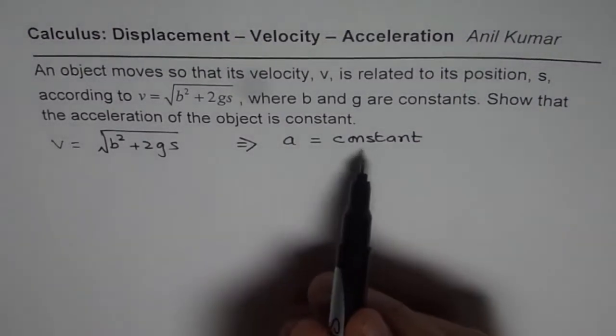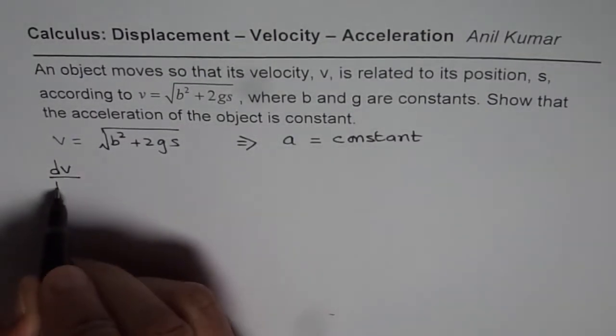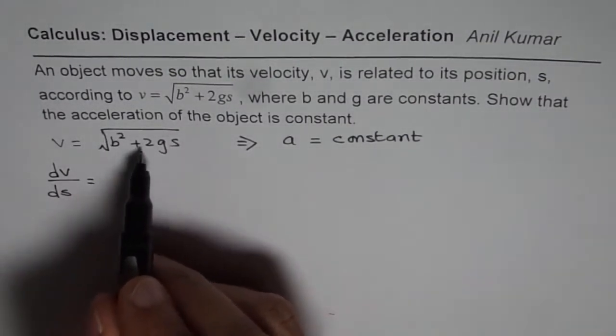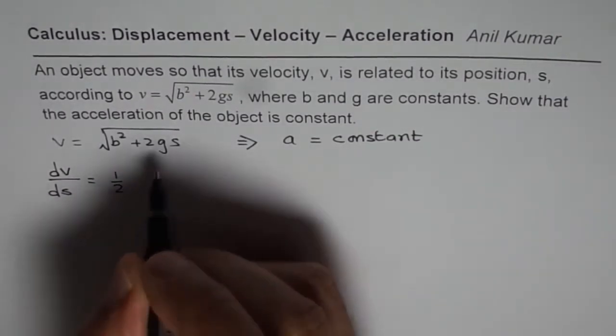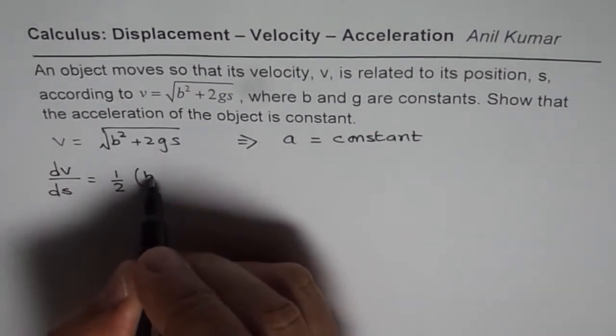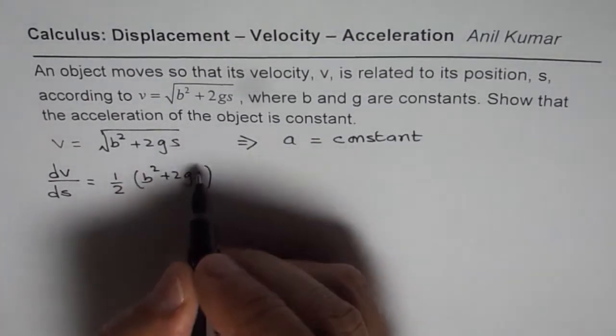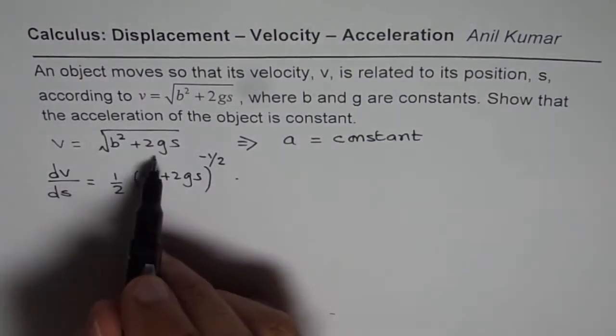Now to prove this, let us find the rate of change of velocity with respect to displacement. So if you do the derivative, it is (b² + 2gs)^(1/2). What you get is (1/2)(b² + 2gs)^(1/2 - 1), which is (1/2)(b² + 2gs)^(-1/2) times the derivative of the inside function.